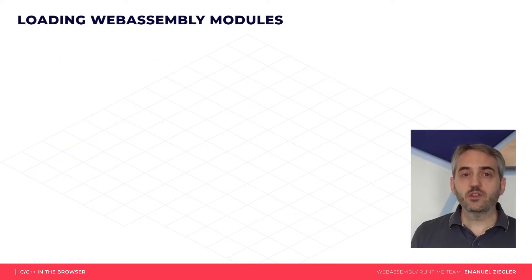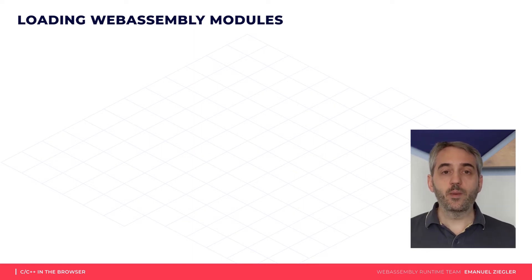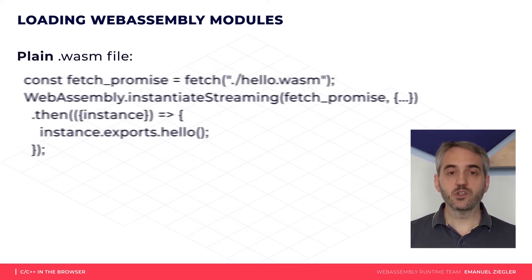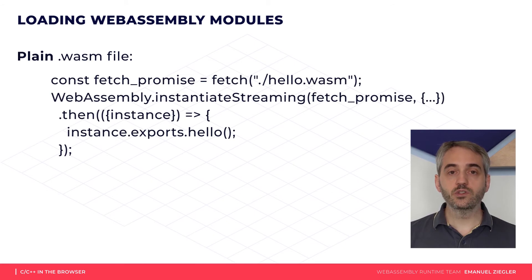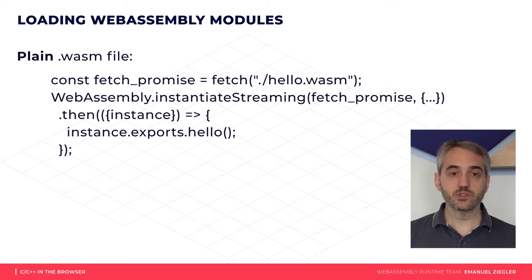The recommended way of integrating a bare compiled module into your web application is to use the streaming interface. This allows the browser to decode and compile the module already while it's loading in the background. Simply pass the fetch promise for the wasm file to the instantiateStreaming method. You will receive a promise in return, which is resolved once the module is instantiated and ready to be used.